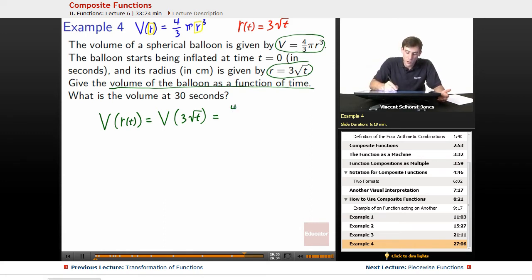So it's going to be four thirds pi times quantity 3 root t cubed. We simplify this out a bit: we get 4 thirds pi times 3 cubed times the square root of t cubed.